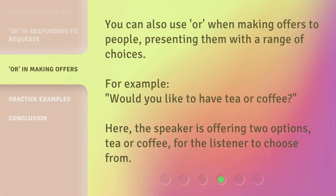You can also use 'or' when making offers to people, presenting them with a range of choices. For example: 'Would you like to have tea or coffee?' Here, the speaker is offering two options — tea or coffee — for the listener to choose from.